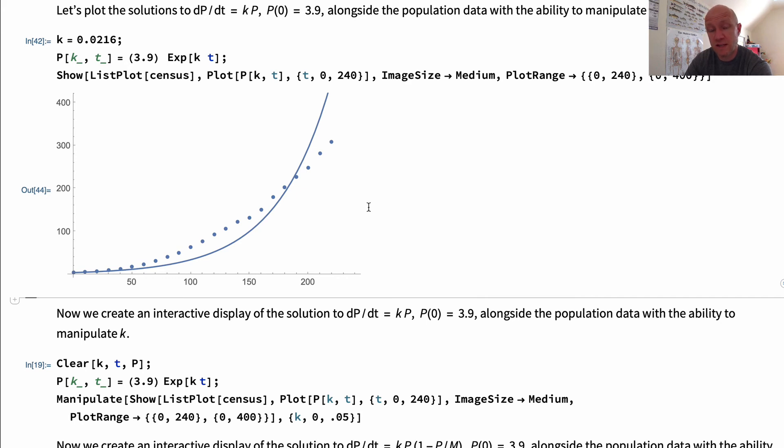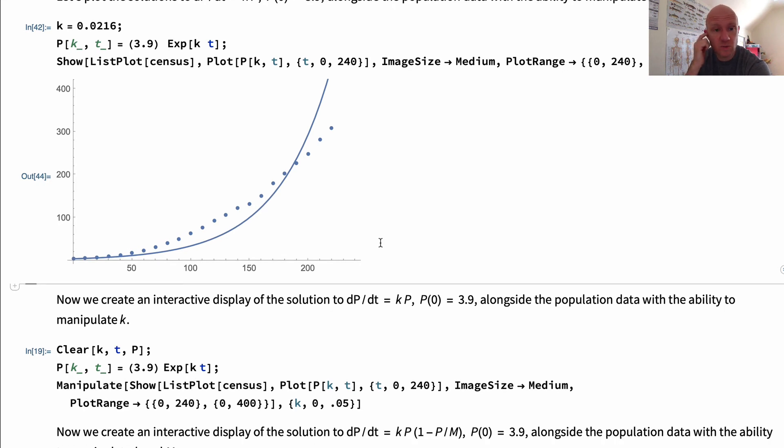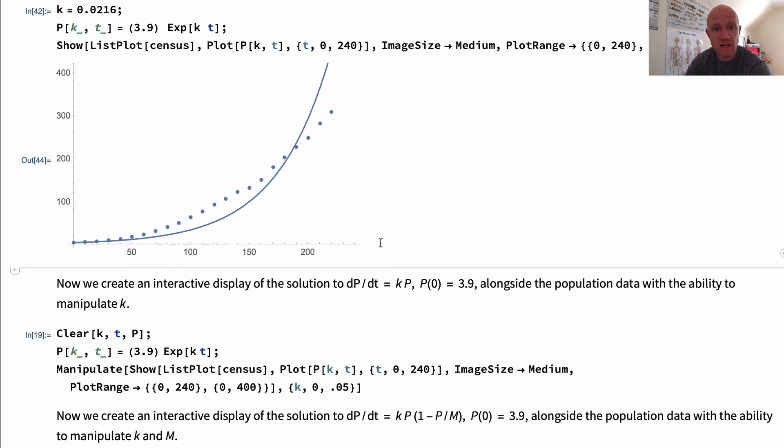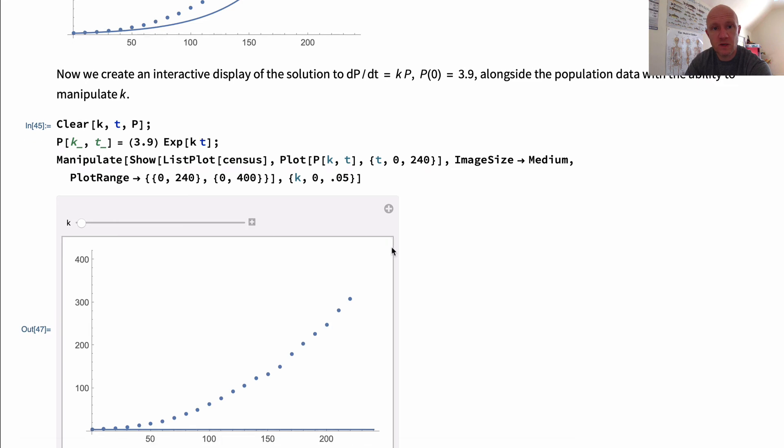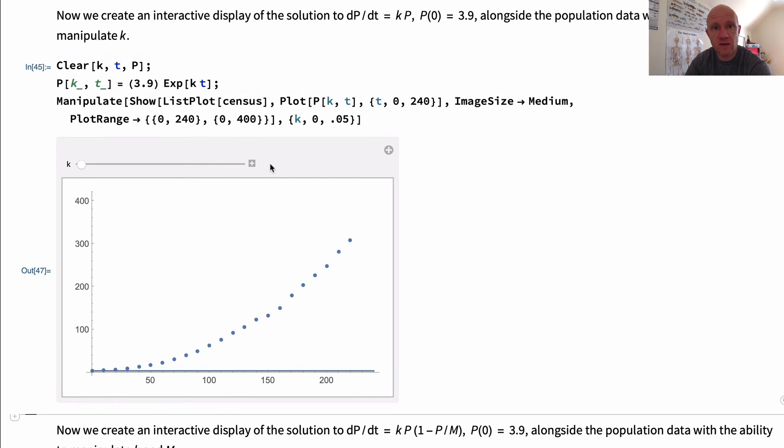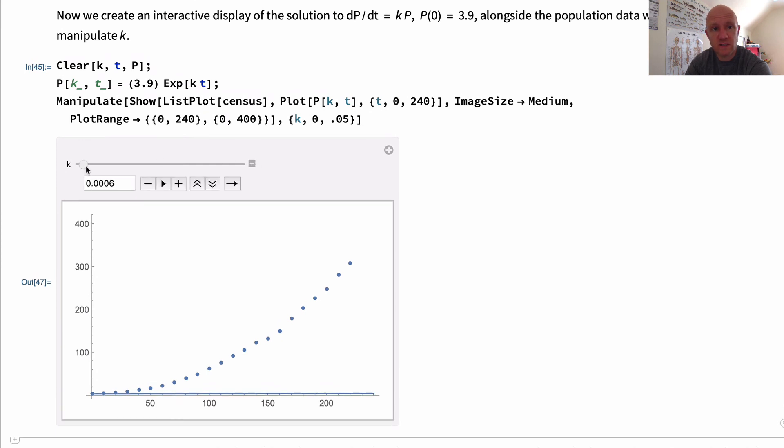But anyway, it's a good first pass at looking at whether or not the US population is growing exponentially. I'd like to do a little bit more just to kind of show you the things that we can do with computing that are sort of fun and visual. What I'm going to do is create an interactive display of dP/dt equals kP, and I'm going to manipulate k. So here what I can do is change the value of k dynamically to see if I can find a curve that fits nicely. It's just not going to fit nicely. So my conclusion here by looking at these different k values for that particular initial value problem is that exponential growth really isn't the right thing here.